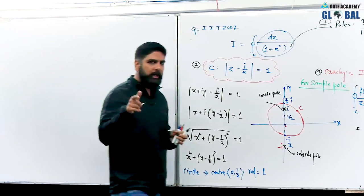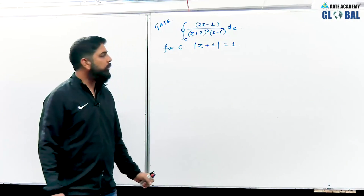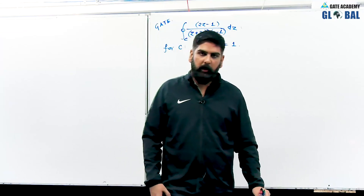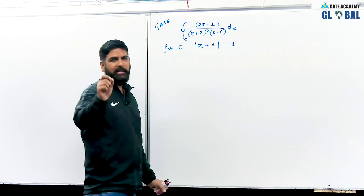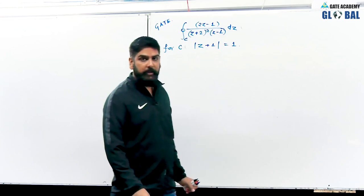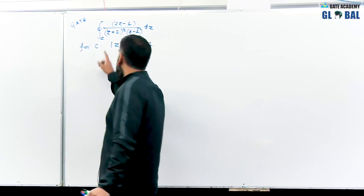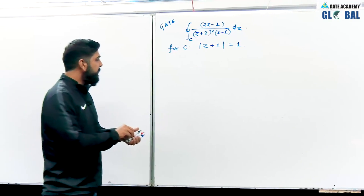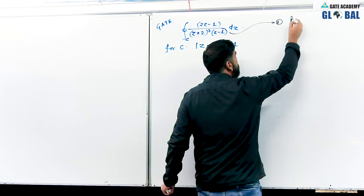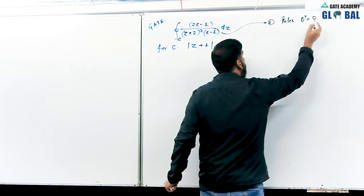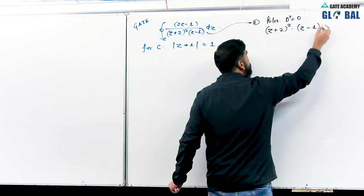Now let us take another question related to the same topic, but this one involves a multiple pole. This is again from the gate examination. The question has a closed integral over curve C and the integrand has denominator z plus 2 whole square times z minus 1. Step number 1: find the poles by setting the denominator equal to zero.